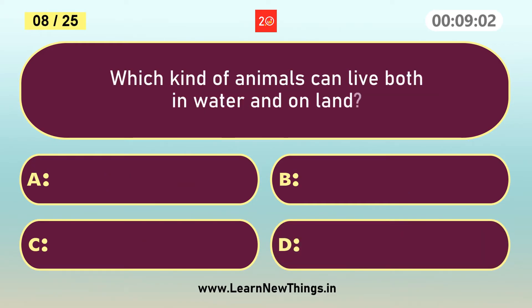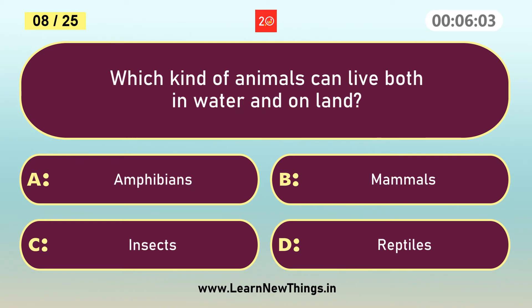Which kind of animals can live both in water and on land? Amphibians.